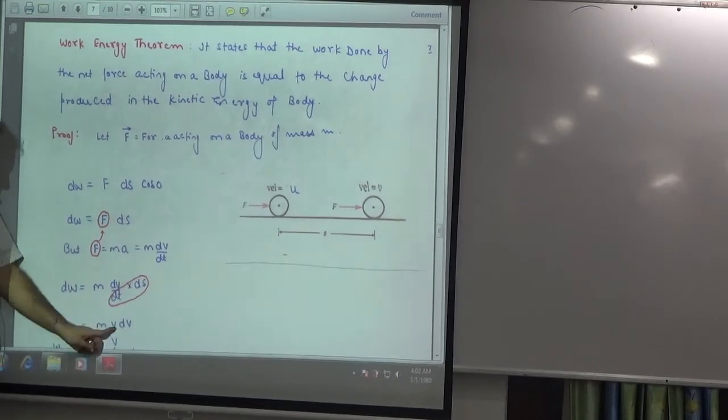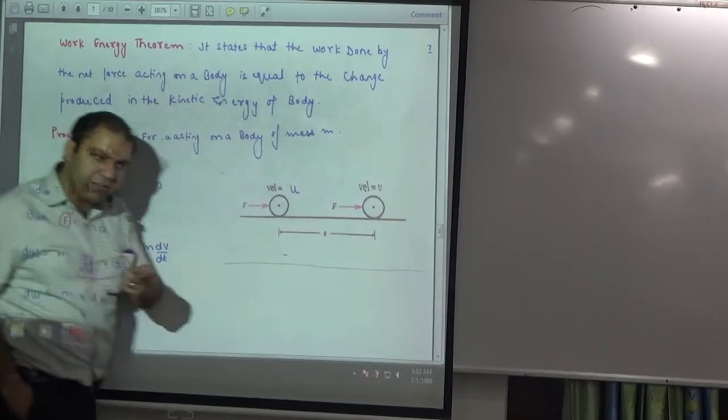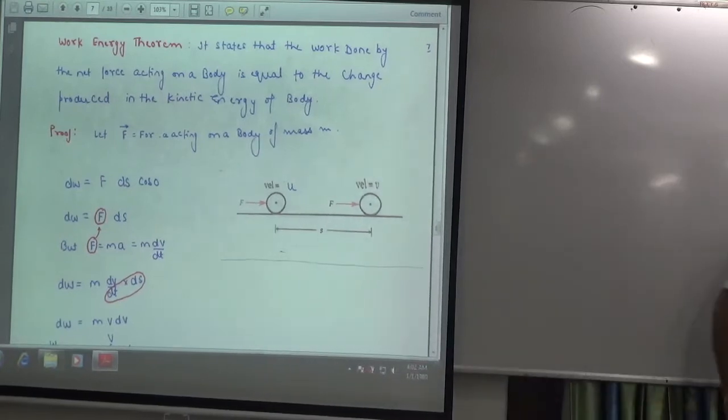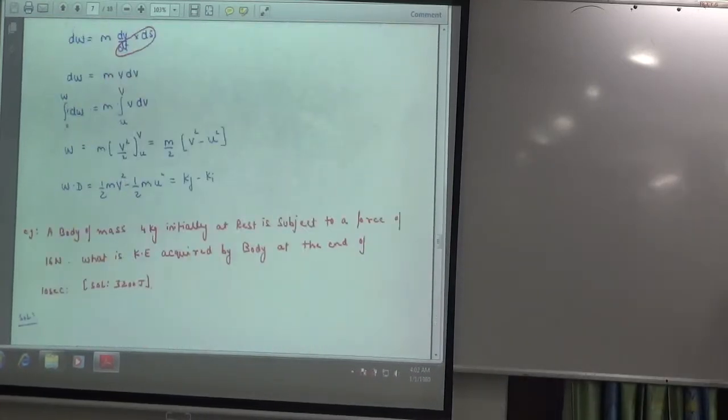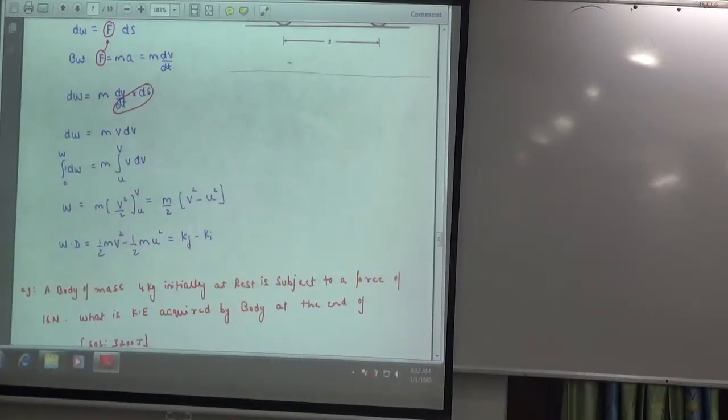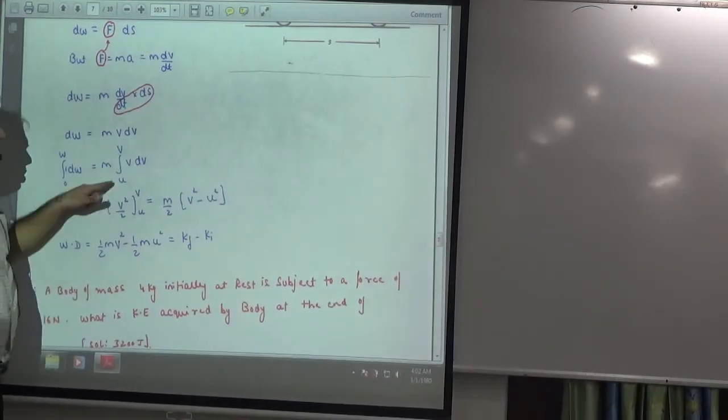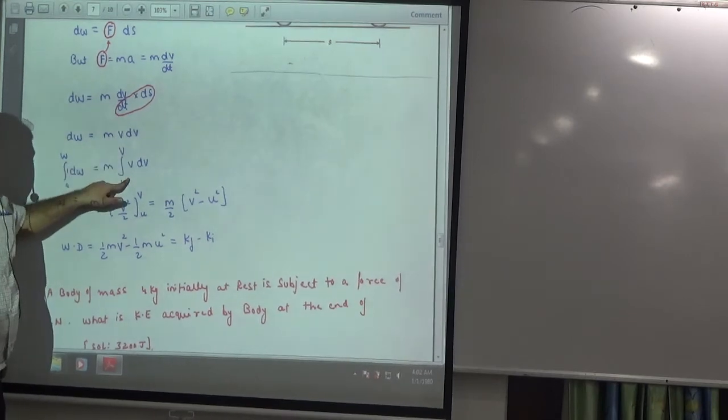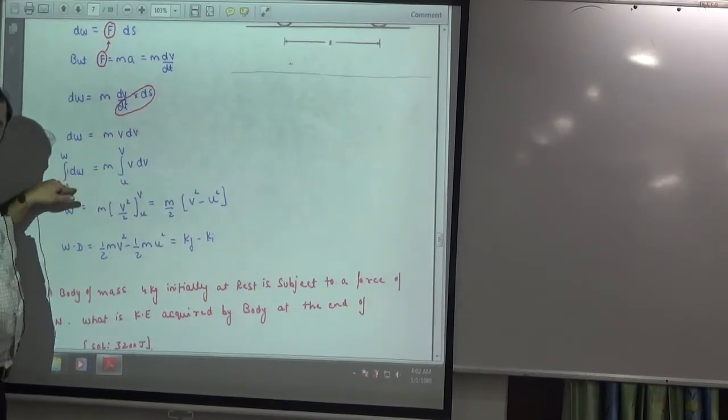You have to move this body, m into dv by dt. ds by dt is v. The kinetic energy derivation is repeating, it is the same as we have done it. So the same as mv dv. Limit is different in the previous case. What was the limit? Zero from v. What was the limit? U from v. So work done.